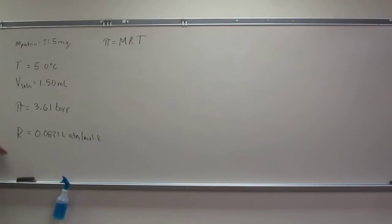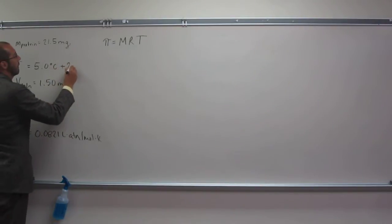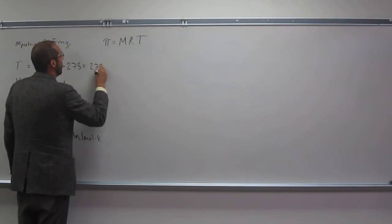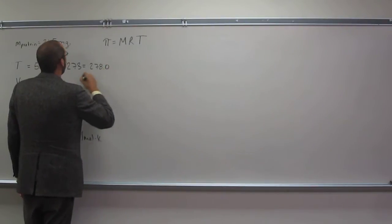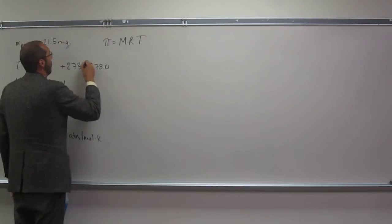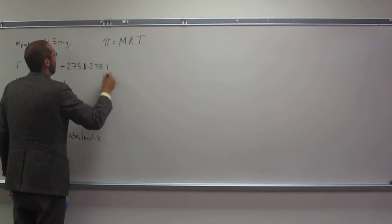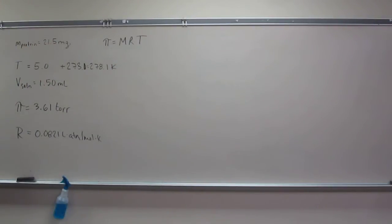We don't have molarity. That's what we're looking for. The gas constant I've written down here already for you. And T is right here. But T is not in the appropriate units, so we're going to have to convert that. We just add 273 to it. That would be Kelvin. So 273.0 plus 5 equals 278 Kelvin.